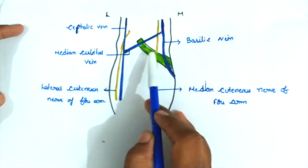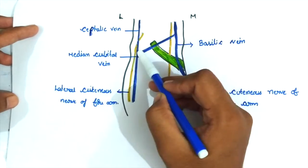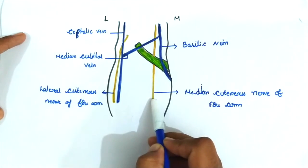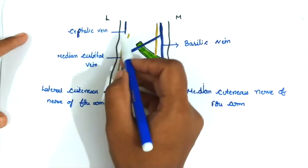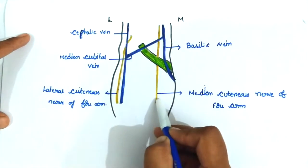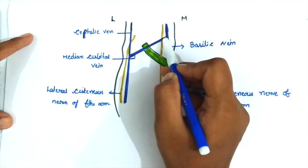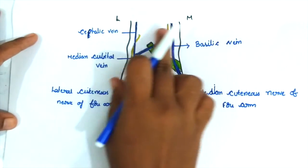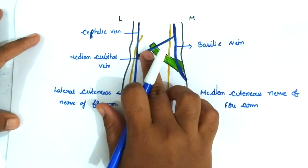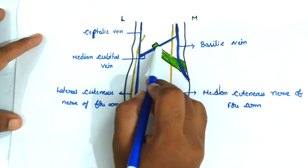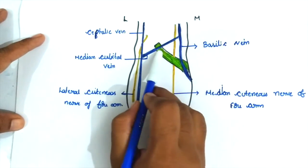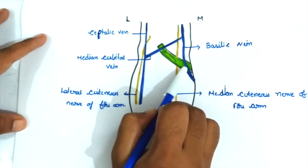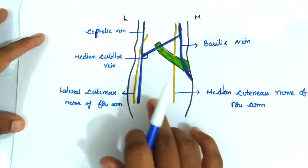The roof is formed by the skin and superficial fascia, which contains the median cubital vein along with the medial and lateral cutaneous nerves of the forearm. After reflecting the skin, we see the superficial fascia with its contents, then the deep fascia. The deep fascia is somewhat thickened on its medial side by the presence of the bicipital aponeurosis, forming the roof.